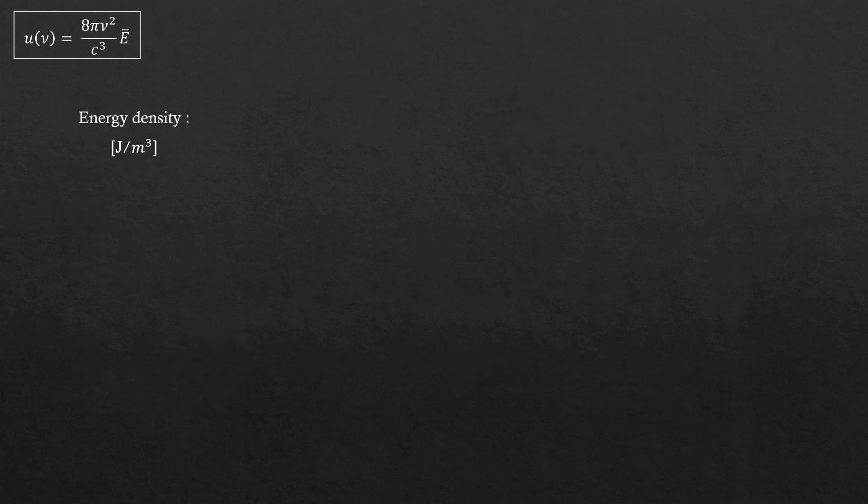All right, this is the last slide. We're almost there. Energy density is joules per meters cube. So total energy divided by the volume, obviously. Total energy could be the average energy times the number of energy levels. And volume is just V.